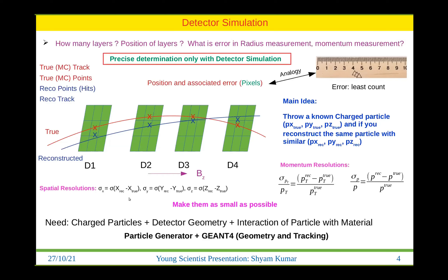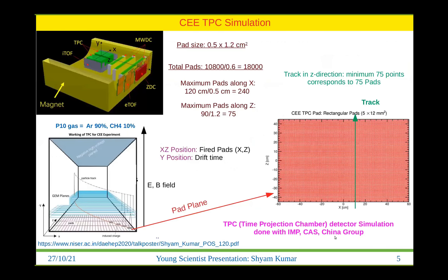There is also the effect of multiple scattering, which I will come to later. The main idea is to reduce these errors as much as possible. To check this setup we need charged particles, a detector geometry, and interaction of particles with material. We need a particle generator, and then GEANT4 can do the rest of the work.